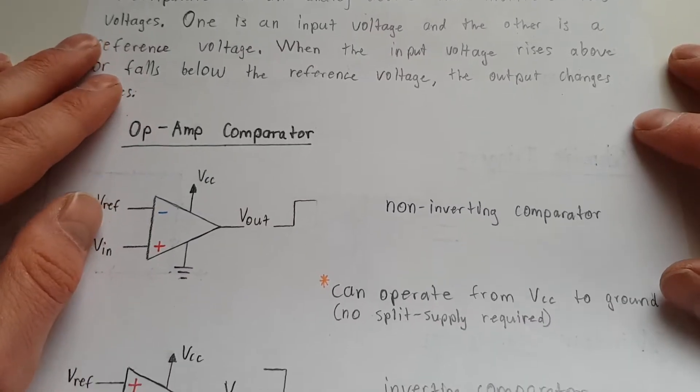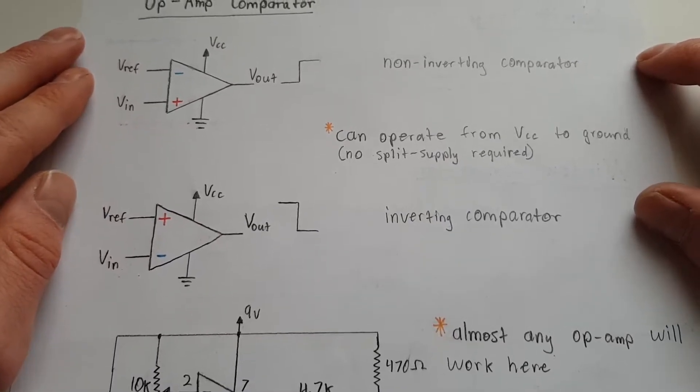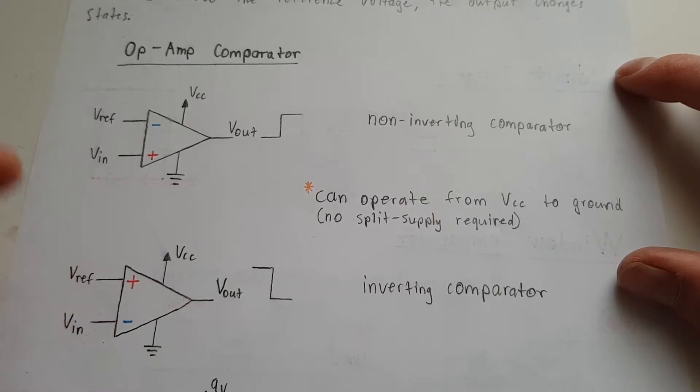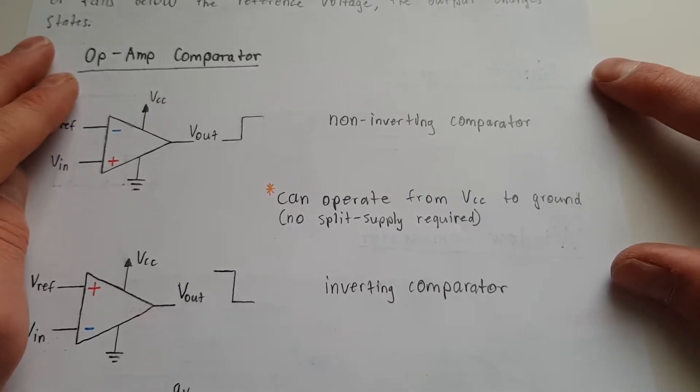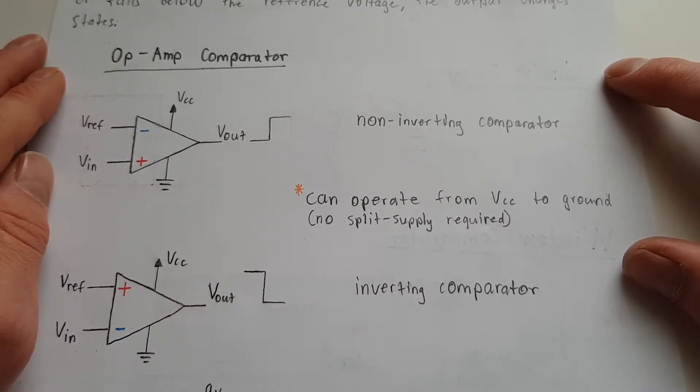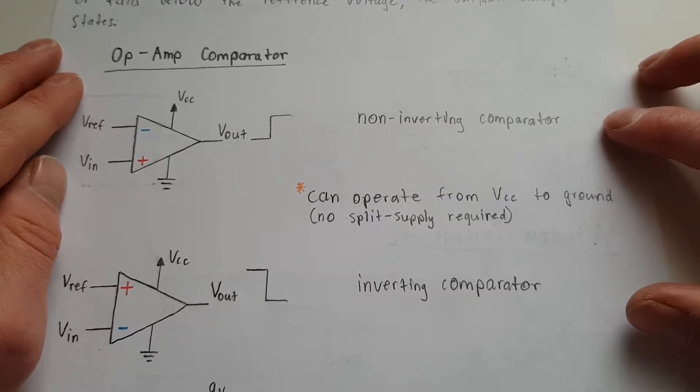Now there's basically two types: you've got non-inverting and you've got inverting, and it just basically depends on which inputs you use for which, the reference or the input voltage. Now unlike other op-amp circuits, you can operate these op-amps without split supplies. You can use single supplies, which is quite handy.